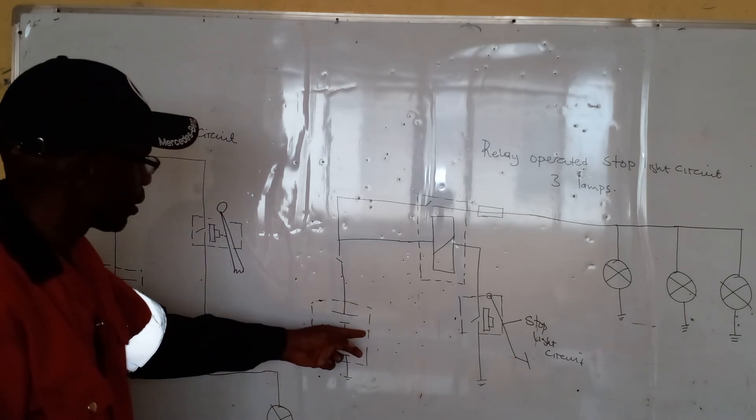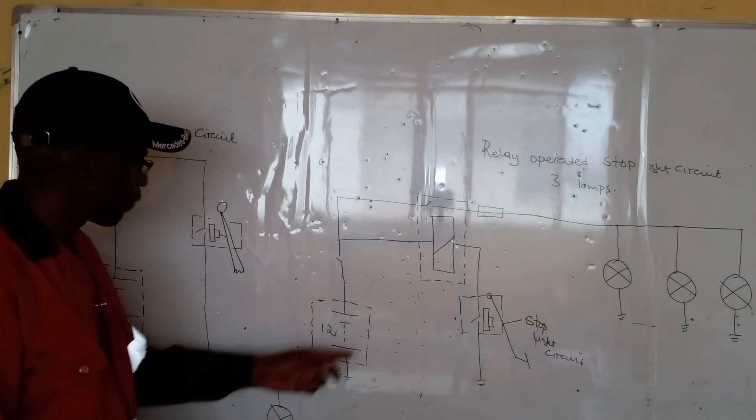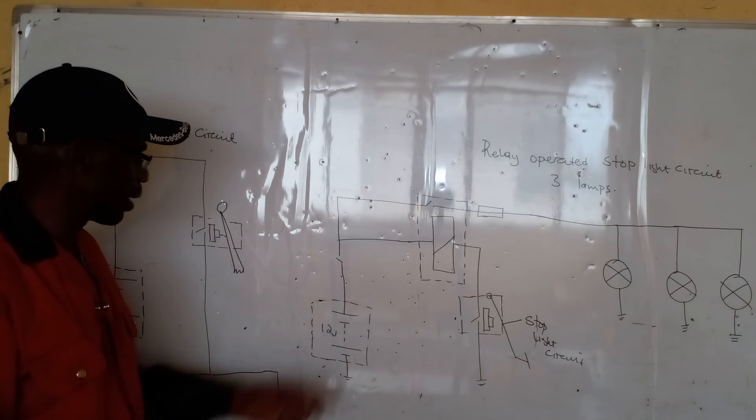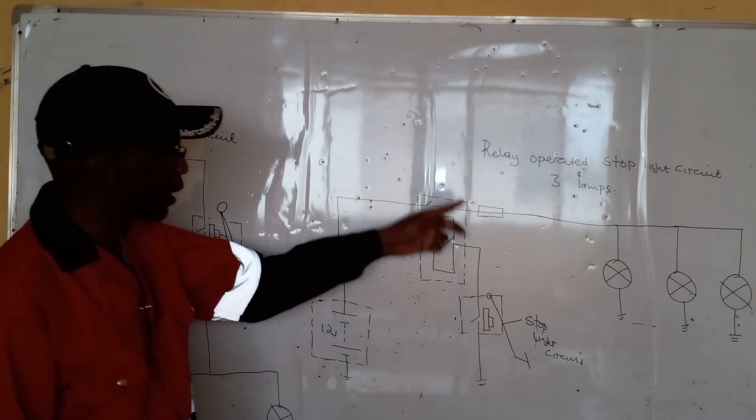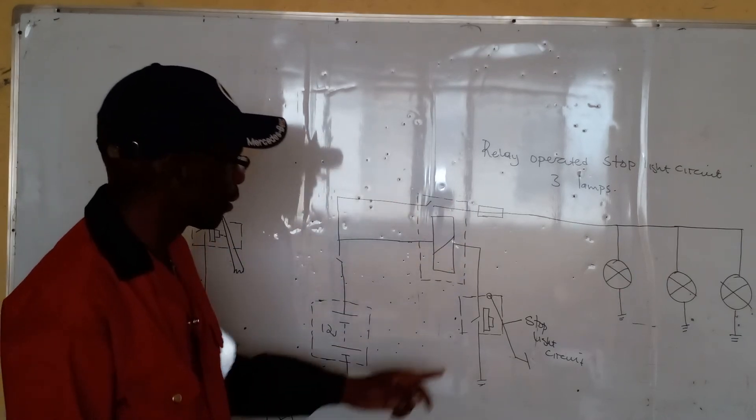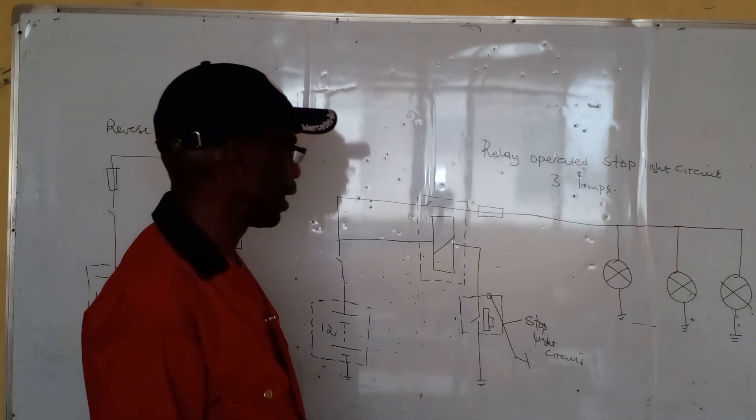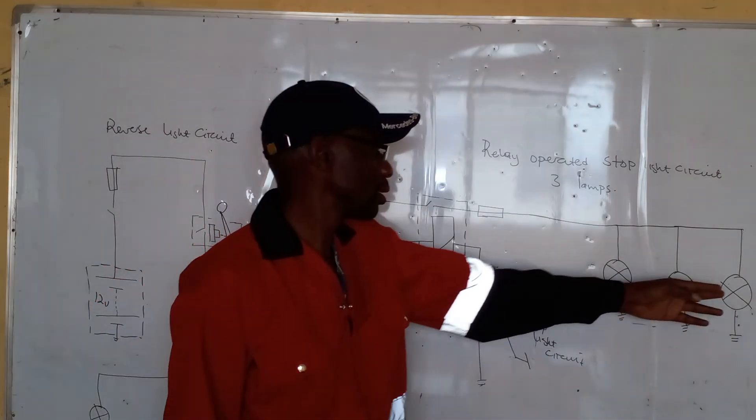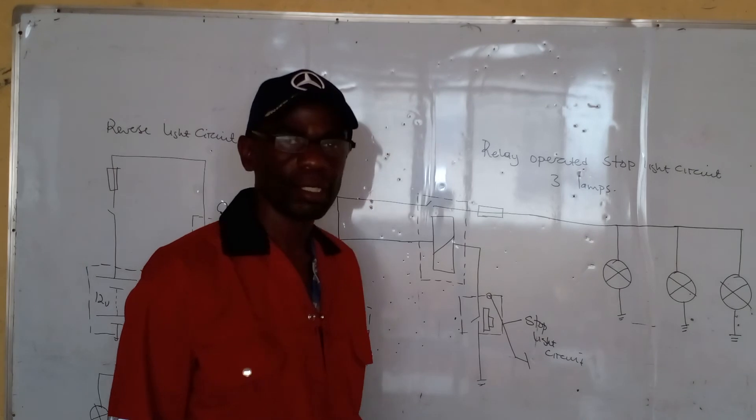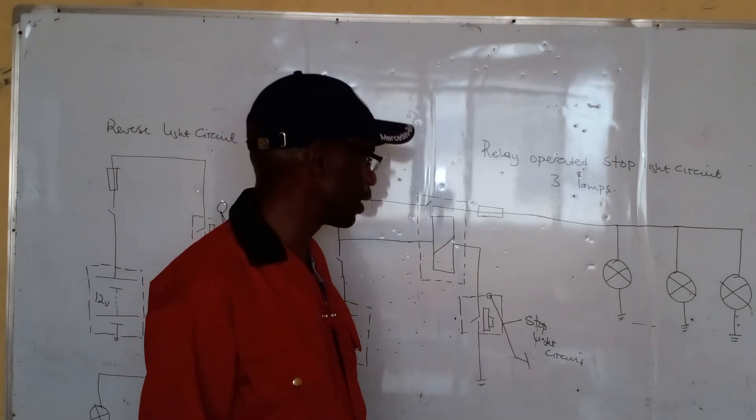Referring to this system now, failure of the battery, flat batteries, relay failure, blown fuse, switch failure, as well as blown lamps are common causes of failure.